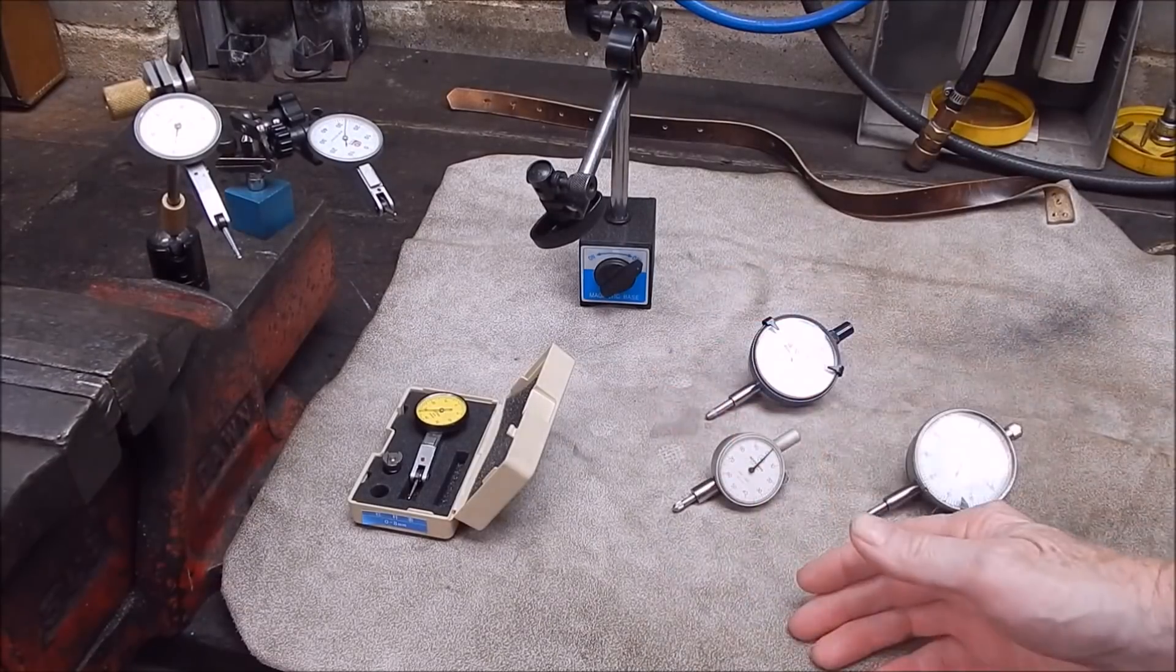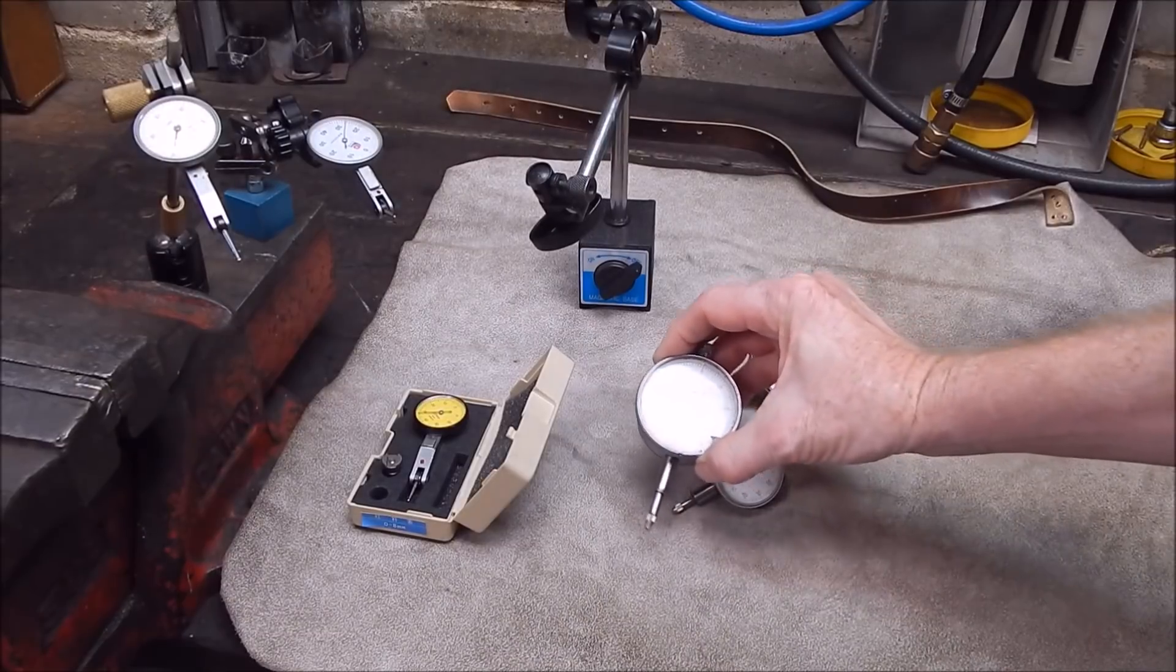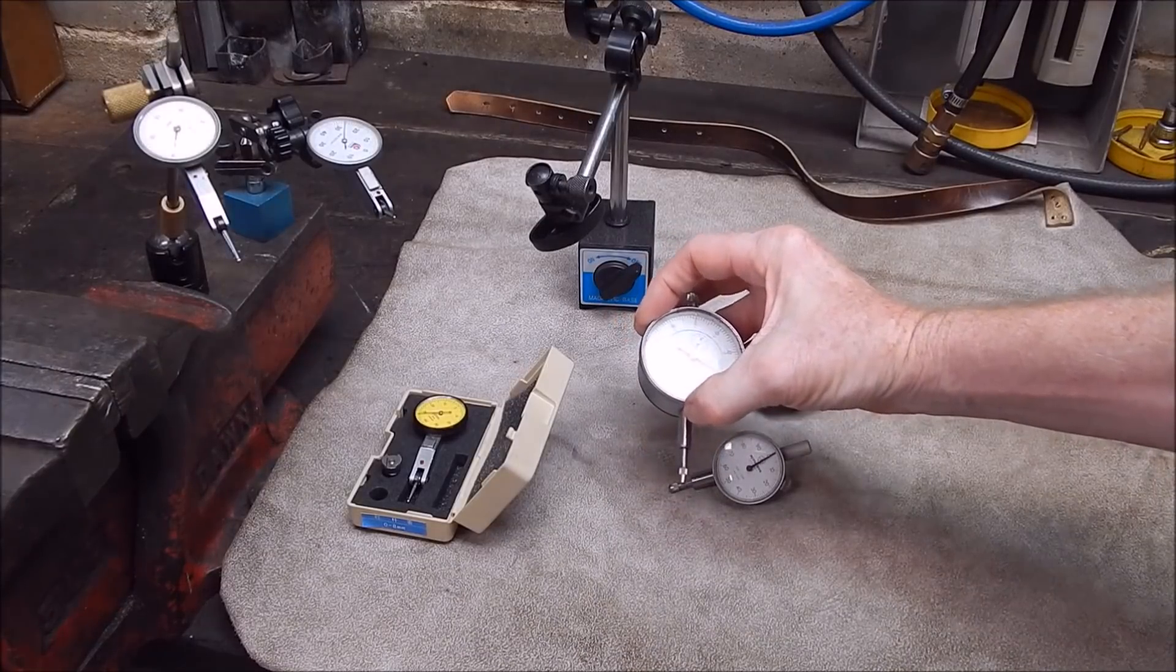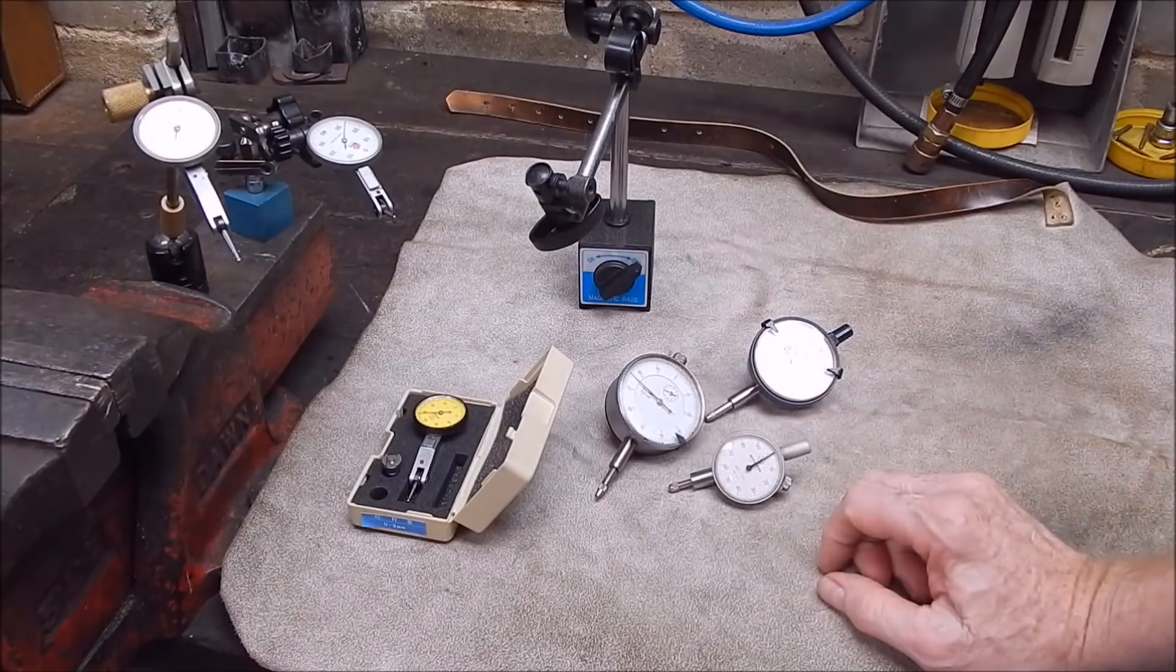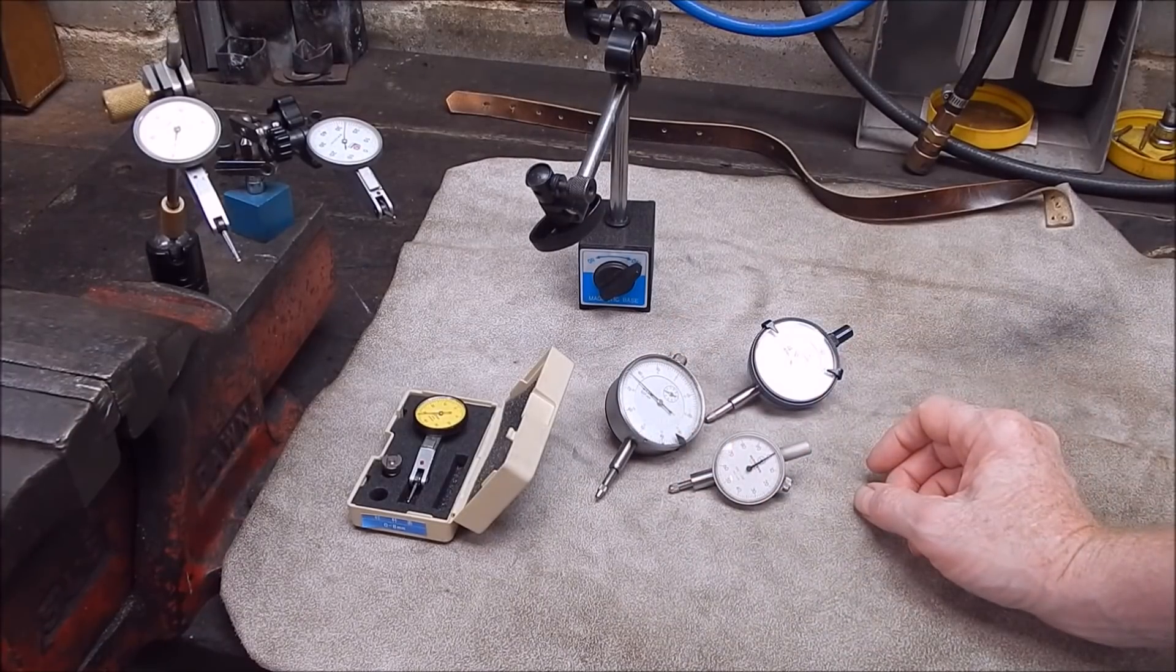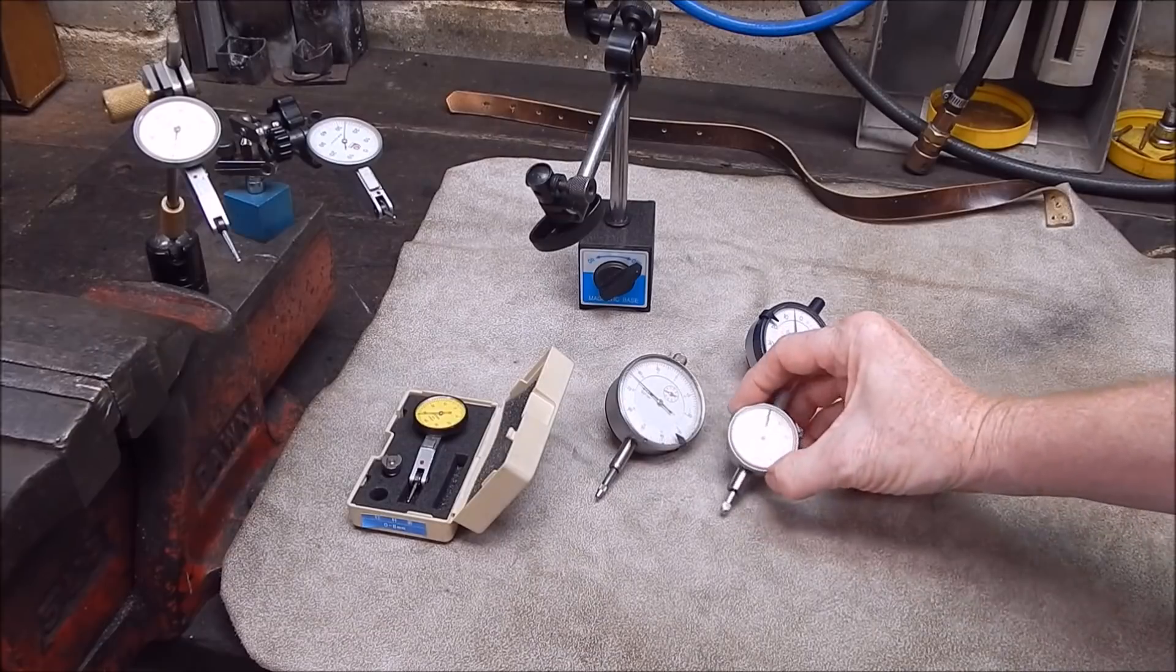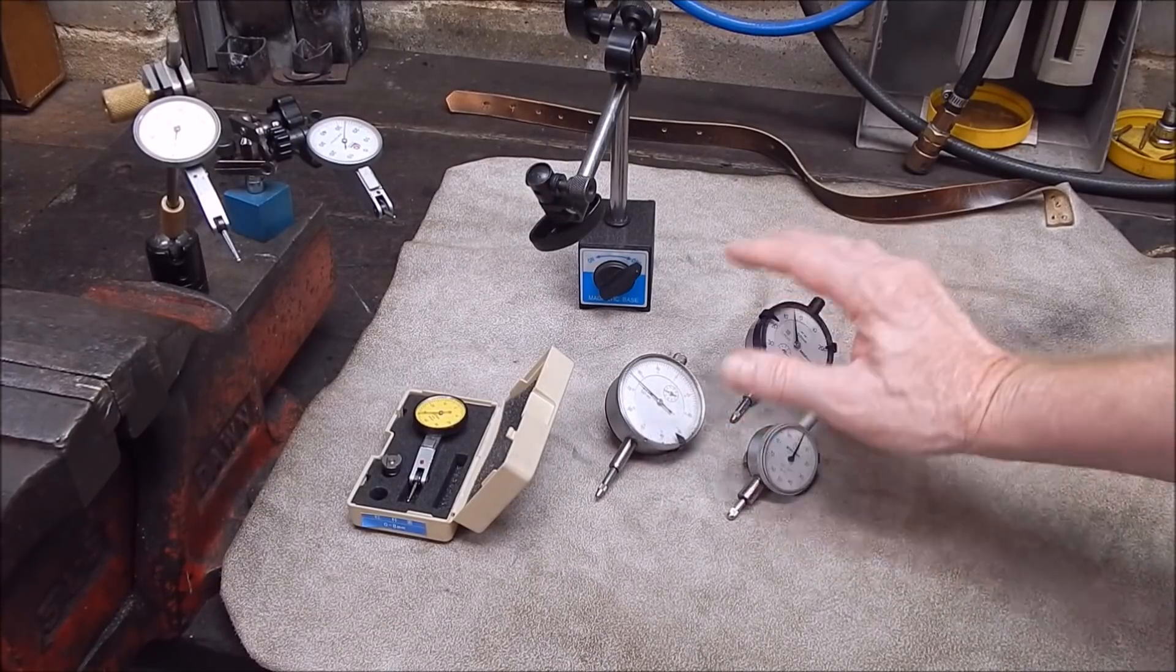So here's my collection. Now when I started off, I bought this first. It's a Chinese dial indicator. No problem. Works perfectly fine. Had years of use out of that. Didn't cost me more than about 20 bucks. Then down the track I got some Mitutoyo's. Got a couple of these, this size. And I got a smaller one.